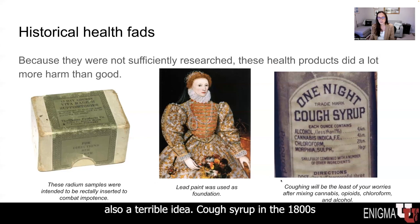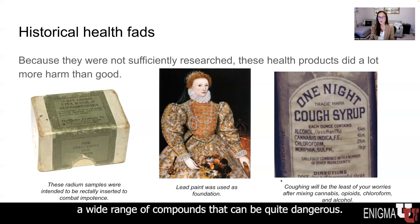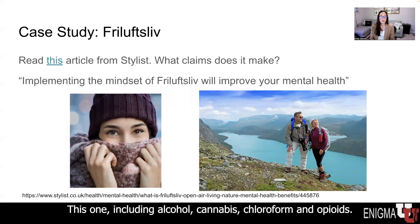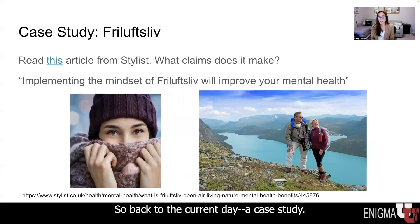And cough syrup in the 1800s frequently included a wide range of compounds that can be quite dangerous — this one including alcohol, cannabis, chloroform, and opioids. So, back to the current day, a case study.